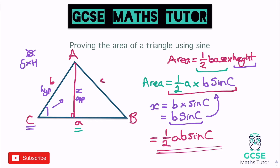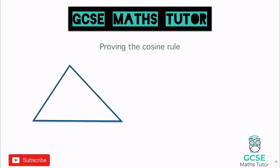We can do any variation by rotating the triangle — we could have ½bc·sinA or ½ac·sinB — but the one we recognize is area = ½ab·sinC. That's how you prove the area of a triangle using sine. Now let's look at proving the cosine rule.